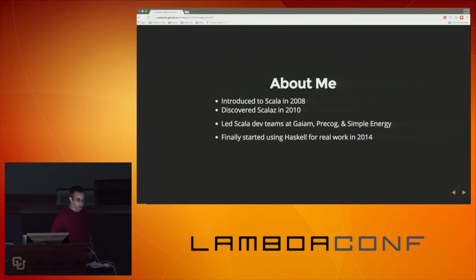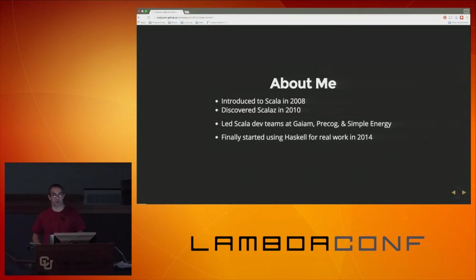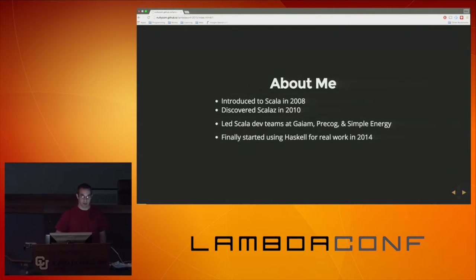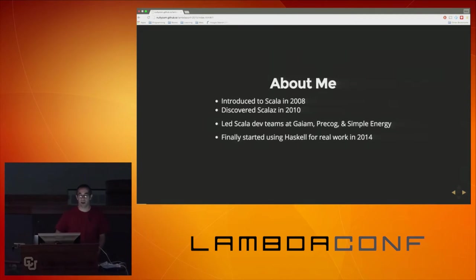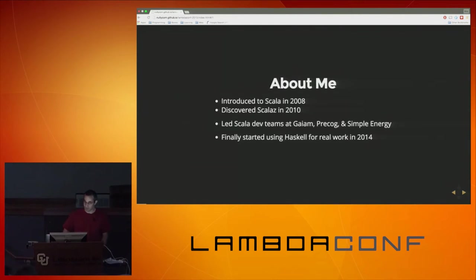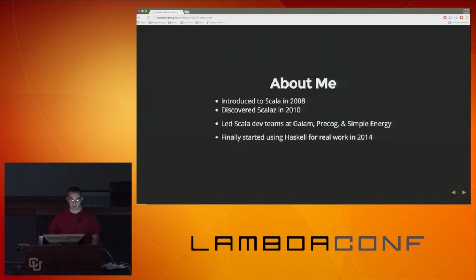I've come to functional programming over a long road. My first professional software development job was in 1998, and in 2008, after a decade with Perl and Java and Ruby, I discovered Scala. Then in 2010 I discovered Scalaz, and I like to say that I fell past the event horizon of the functional black hole. I haven't written any Scala in the last six months because I've been writing Haskell for basically everything. But I've had the good fortune to lead a few top-notch Scala development teams, and I think that's given me a unique perspective on coming to functional programming.